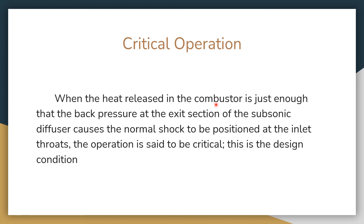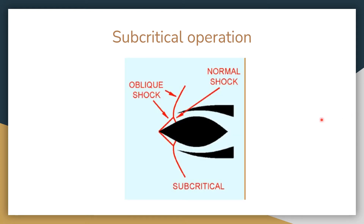This is known as the design condition of the ramjet, or also called critical operation. The next one is subcritical operation. Subcritical operation means if an engine works below the design condition — for example, if the design condition is between Mach 4 and Mach 5, and the engine operates below Mach 4. In the previous picture the oblique and normal shock were exactly placed at the mouth or inlet, but here there is a gap, leading to spillage of air.